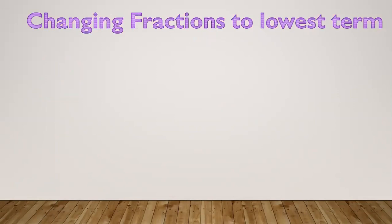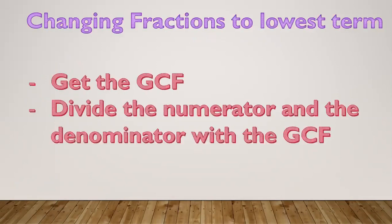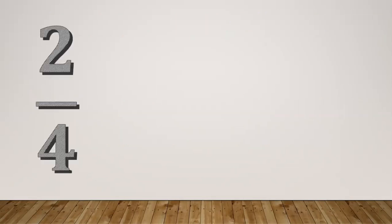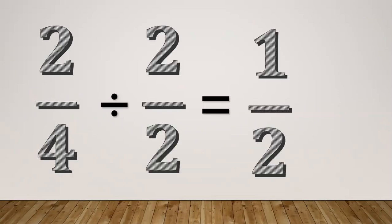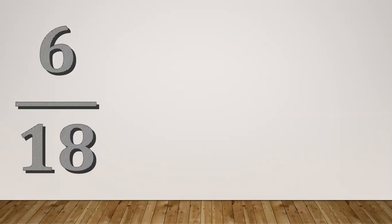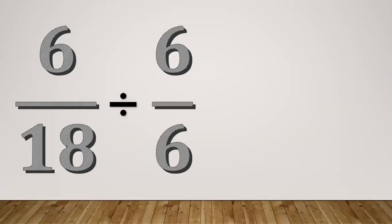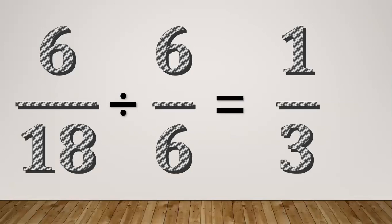We can also change a fraction to its lowest term when there is a common factor in the numerator and denominator. First, get the GCF — the greatest common factor — then divide both the numerator and the denominator by the GCF. For example, 2/4 is divisible by 2, so the GCF is 2. Two divided by 2 equals 1, and 4 divided by 2 equals 2. So the lowest term of 2/4 is 1/2.